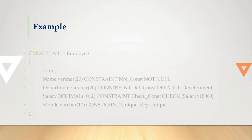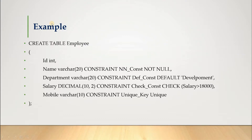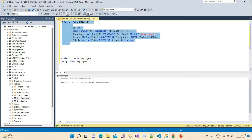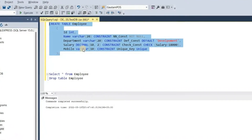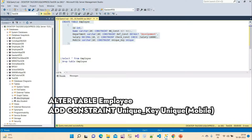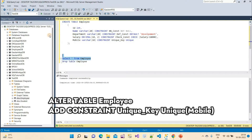Now let's see the example of the unique constraint. We are going to create an employee table with an additional mobile number column, and we will apply the unique constraint on it. As mentioned, family members all have different mobile numbers, so we use the mobile column as a unique constraint. Let me move to SQL Server Management Studio and execute this query — the constraint keyword, constraint name, and unique are applied on the mobile number column.